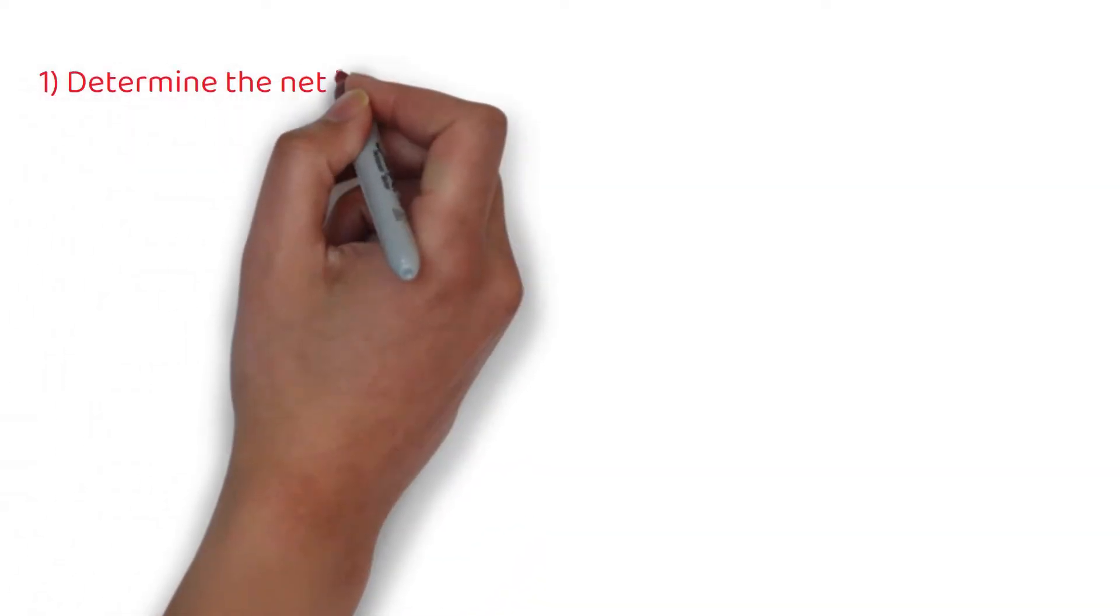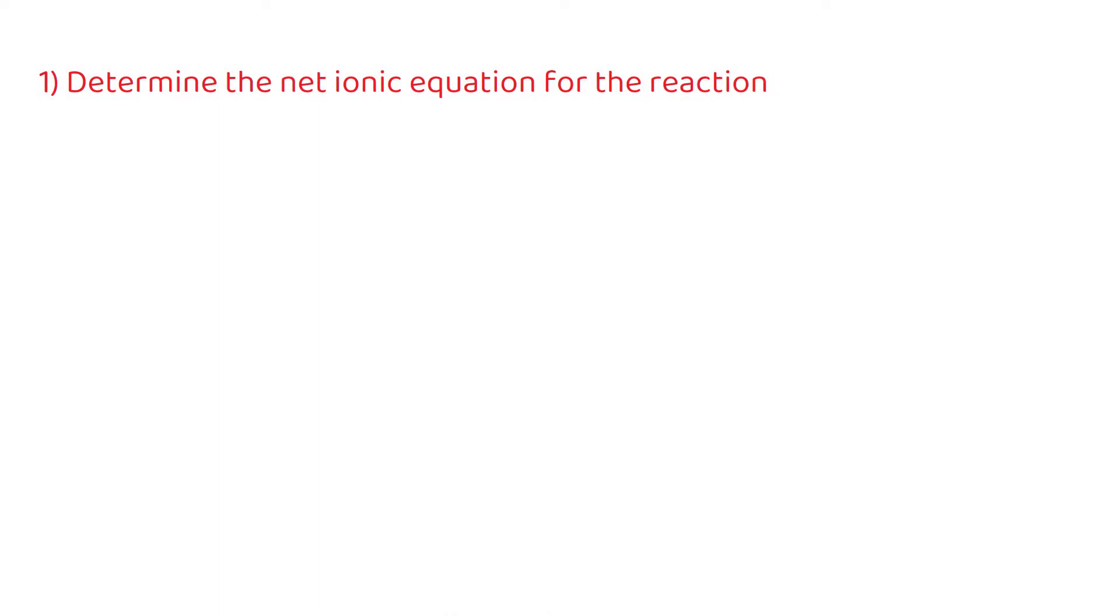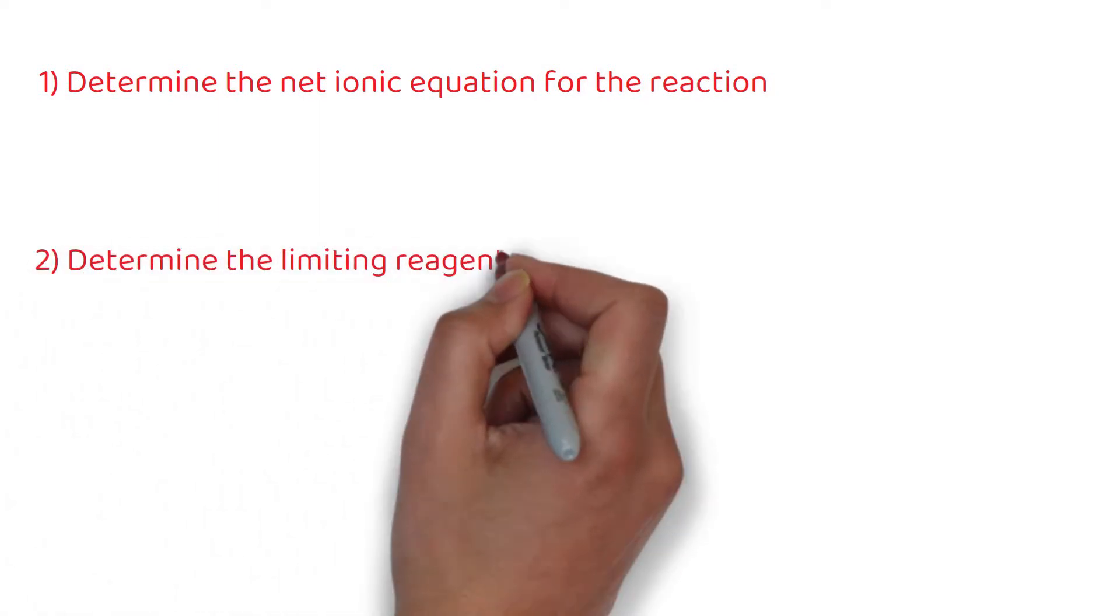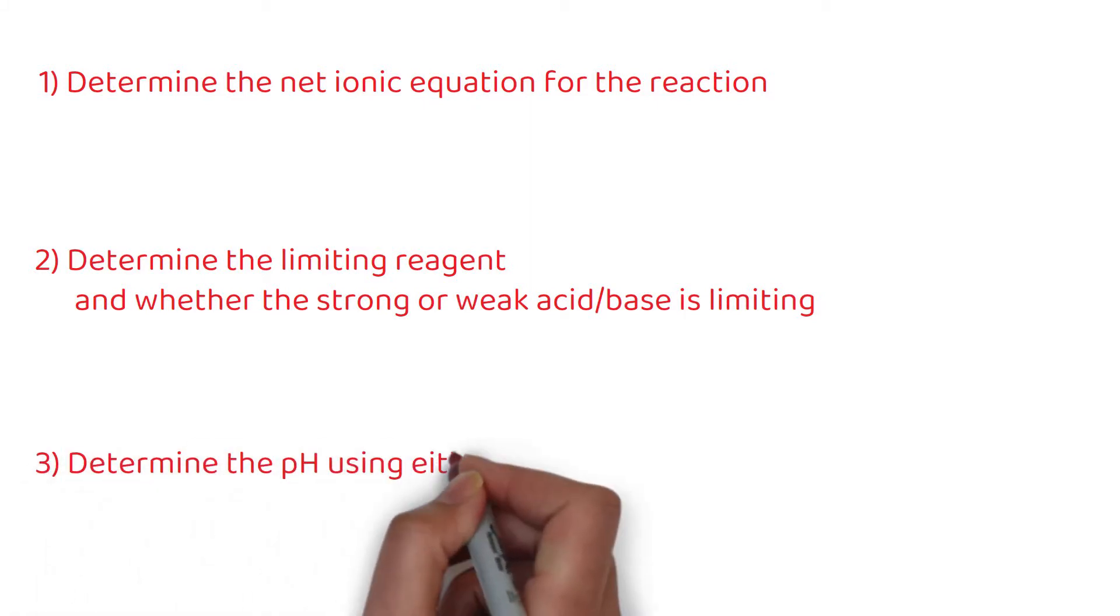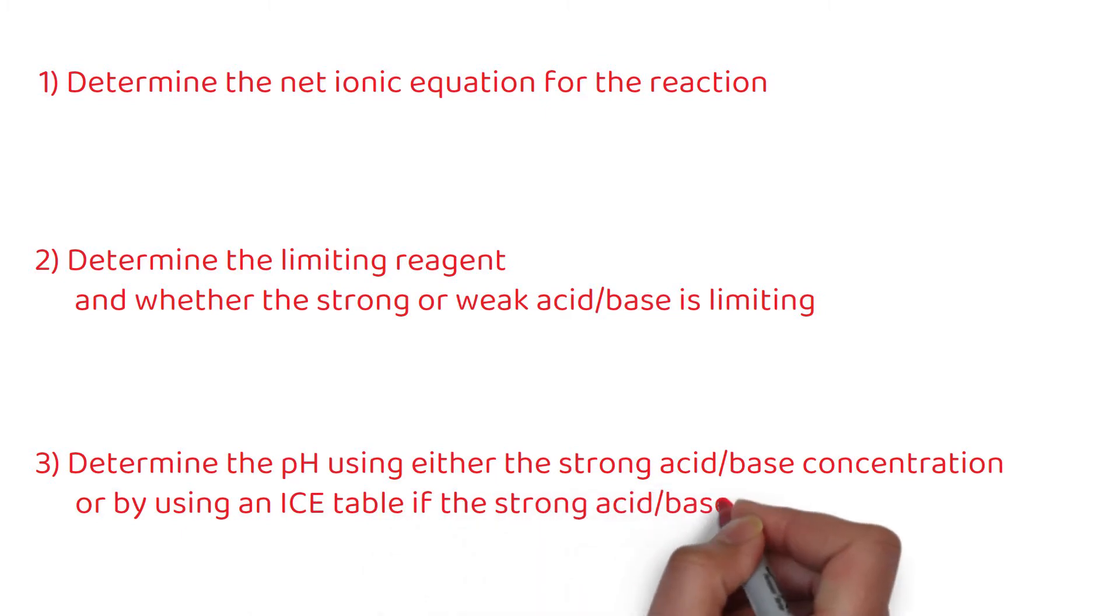These problems take a lot of steps, but they are not difficult if you follow a three-step process. First, determine the net ionic equation for the reaction. Second, determine the limiting reagent and whether the strong or weak acid base is limiting. Third, determine the pH using either the strong acid base concentration or by using an ICE table if the strong acid base is limiting.